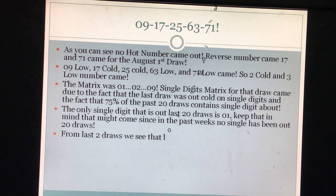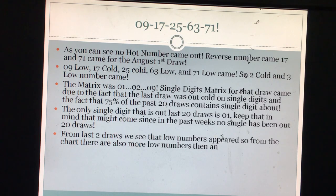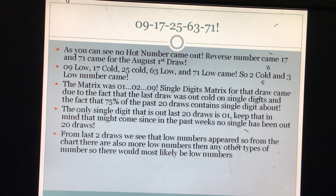From last 2 draws we see that no numbers appeared. So from the chart there are also more no numbers than any other types of number out there. So it will be wise to pick no numbers for your next draw, ranging from 1 no number to 3 no numbers.